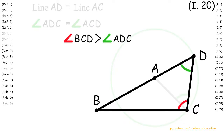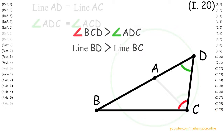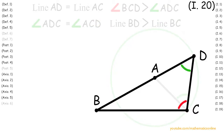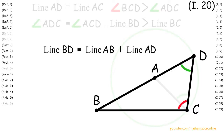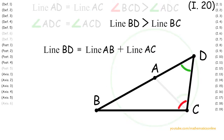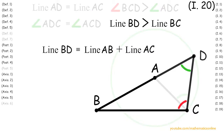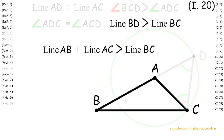Now since angle BCD and angle ADC are angles in triangle BDC, then by Proposition 19, line BD is greater than line BC. So looking at line BD, we can see that it is congruent to the sum of line AB plus line AD. Now since line AD is congruent to line AC, then line BD is congruent to the sum of line AB plus line AC. Since we also have that line BD is greater than line BC, then line AB plus line AC is greater than line BC.